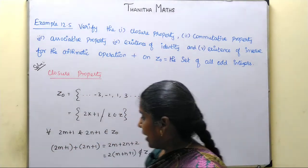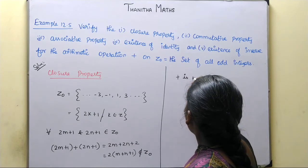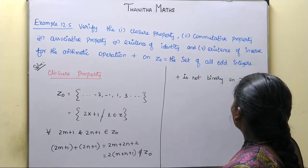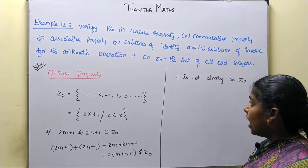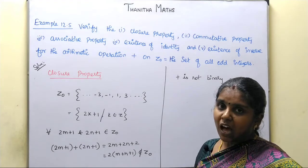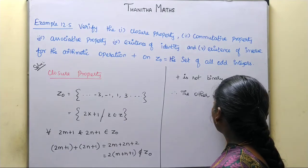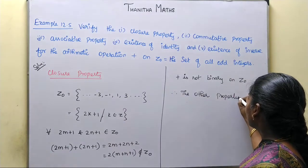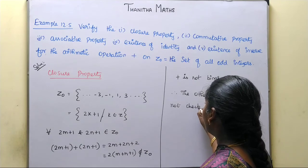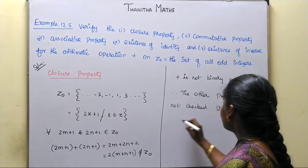Therefore, the binary operation is not satisfied. Addition is not a binary operation on ZO. Since the closure property is not satisfied, we need not check the other properties — commutative, associative, identity, and inverse. They need not be checked, since the set is not closed under addition.